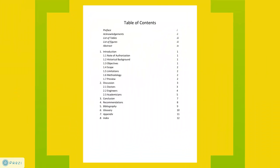Following this is the table of contents. It enlists all the elements in the report in sequential order along with their page numbers. The elements before the introduction are written in italics and numbered using lower Roman numerals. The rest of the elements follow the decimal numbering system depending on their hierarchy, and page numbers are written using Arabic numerals. Note that the bibliography, glossary, appendix, and index are also in italics.